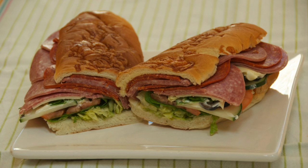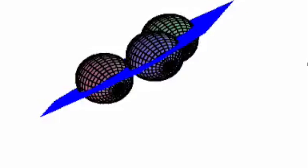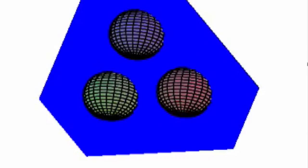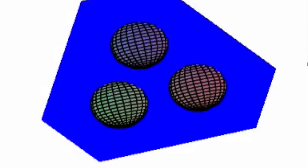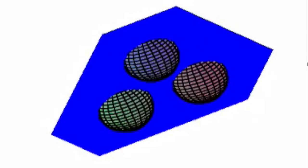Such a division is easier to see if the three objects are spheres. The plane going through the center of the spheres divides each sphere equally in half. The ham sandwich replaces the spheres with more complicated objects, but the intuition is the same.